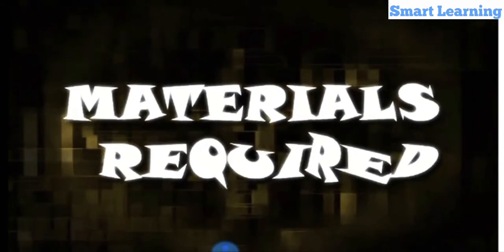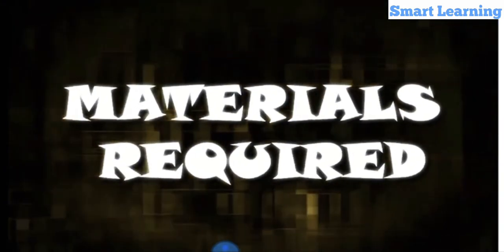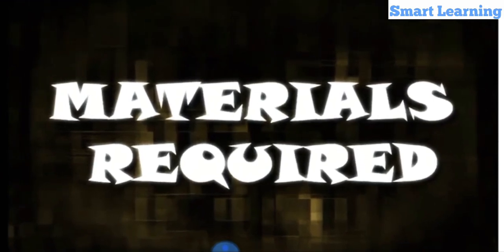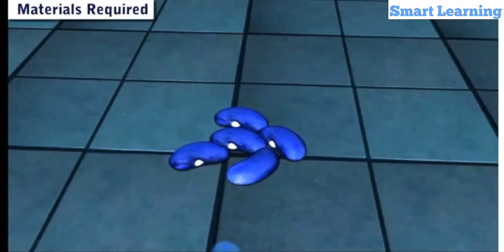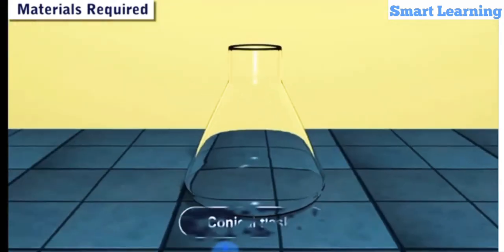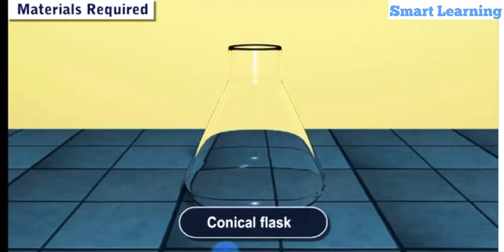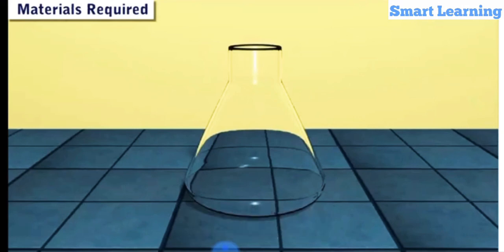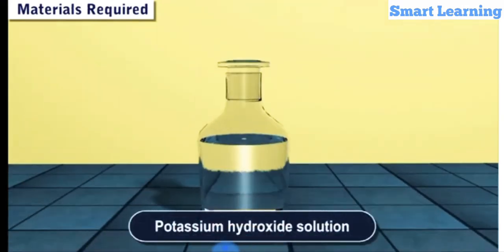Materials required for this experiment: germinating bean seeds, conical flask, potassium hydroxide solution.